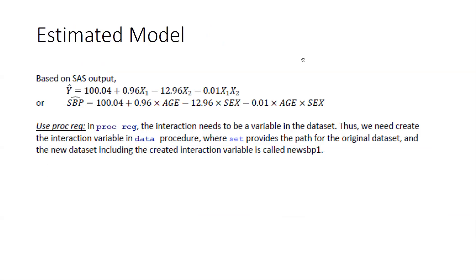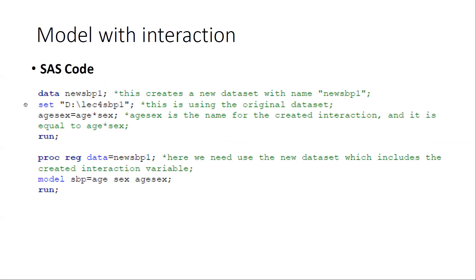Based on the SAS output, the estimated model is: 100.04 plus 0.96 times age, minus 12.96 times sex, minus 0.01 times the interaction term — plugging in the estimated values of all parameters beta 0, beta 1, beta 2, and beta 3. When using the SAS procedure PROC REG, the interaction must be a variable in the data set, so we formally created the interaction term in the data procedure, which is what we did earlier.